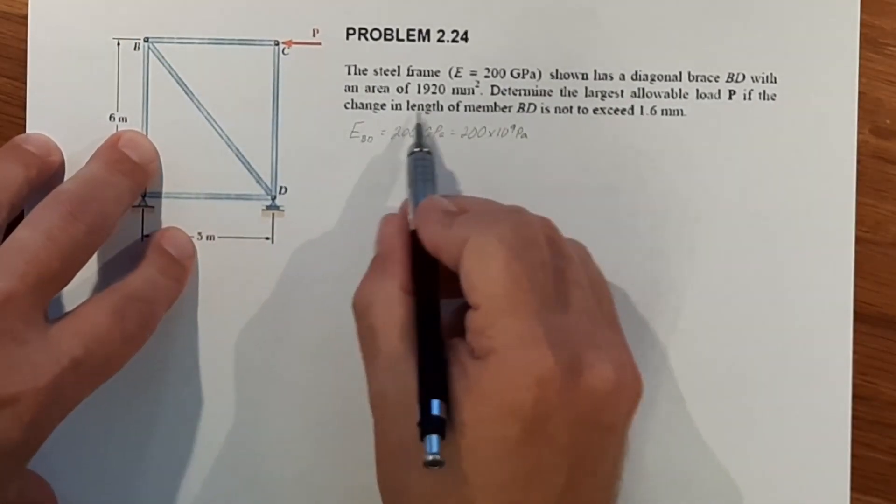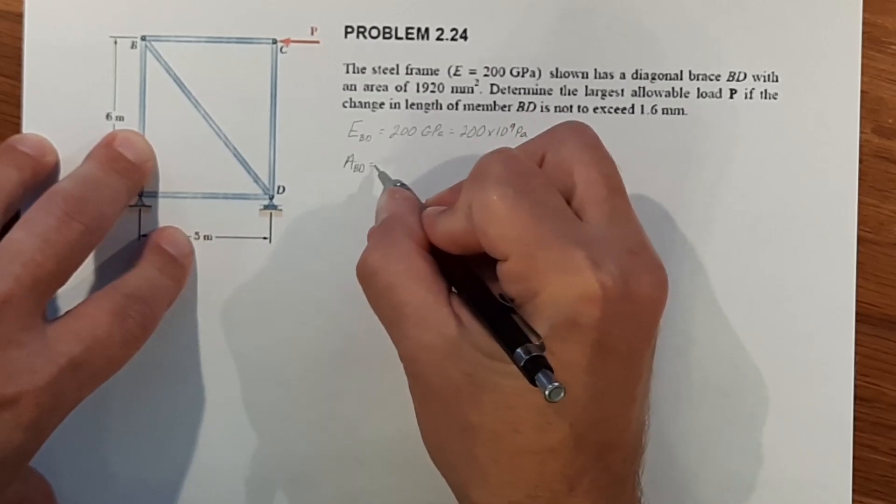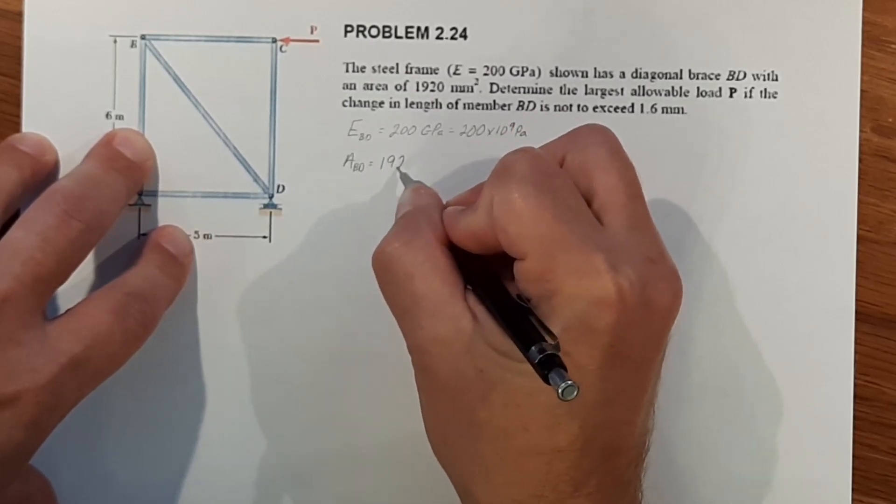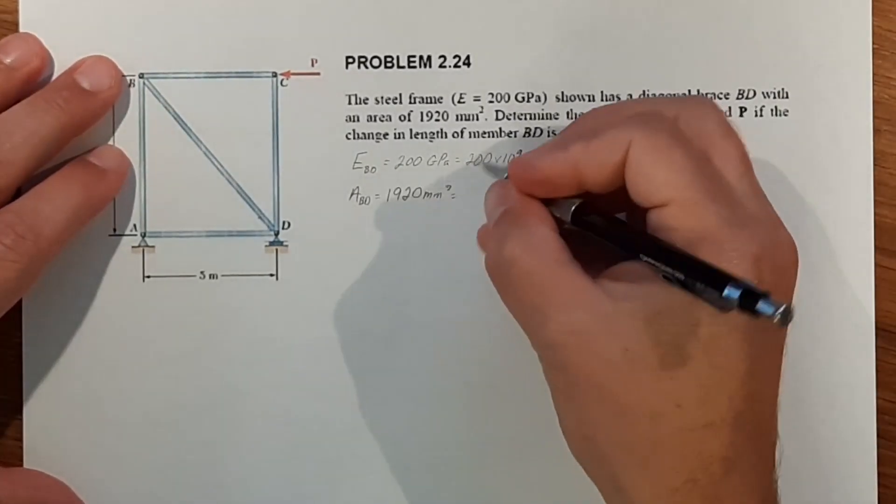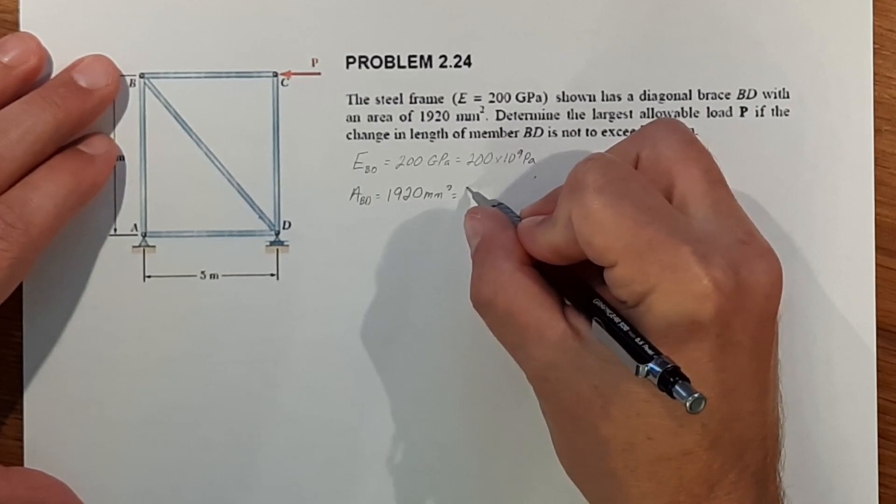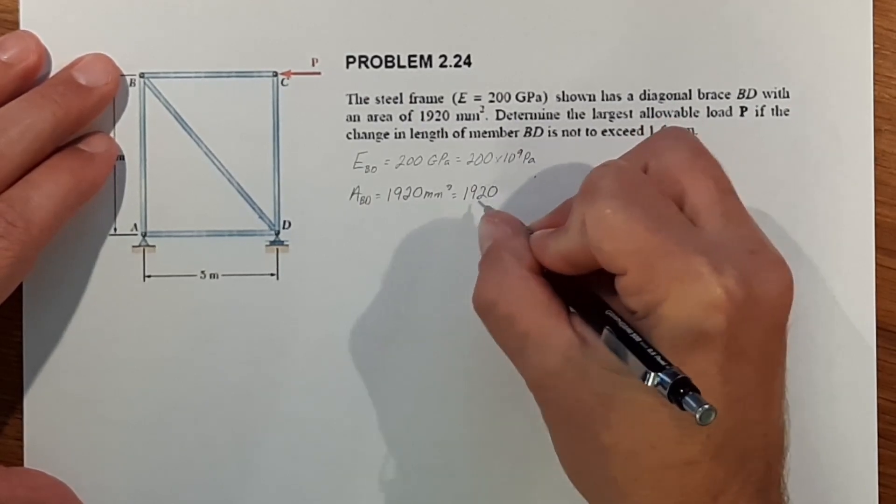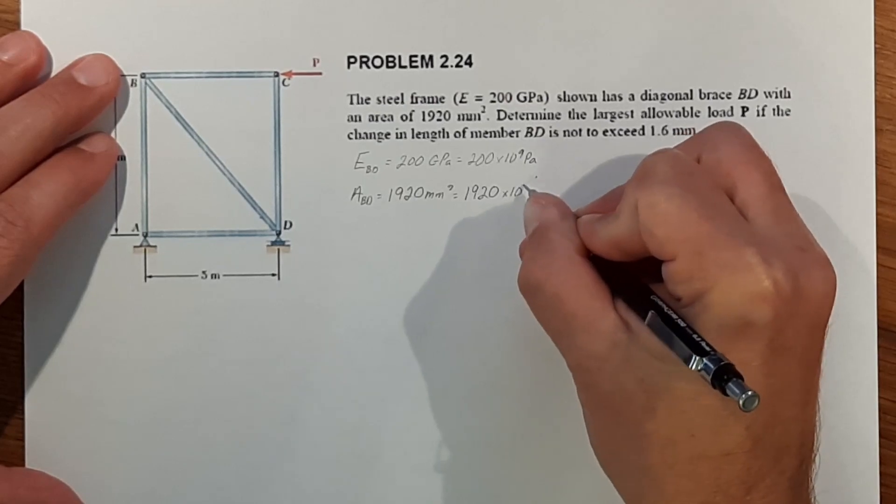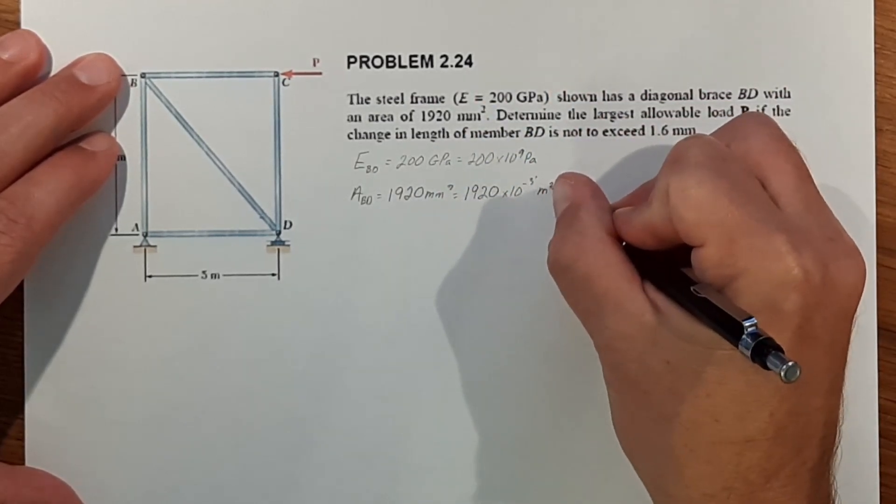We know our area of BD is 1920 millimeters squared. And to keep our units the same, we're going to go ahead and change that to meters squared. So 1920 times 10 to the negative 6 meters squared.